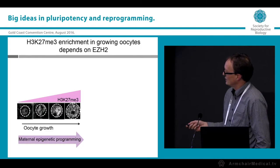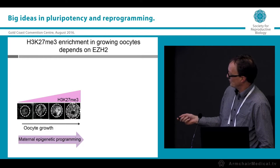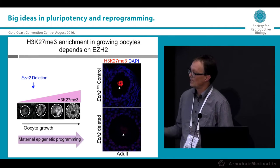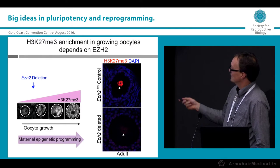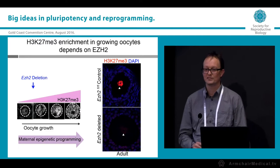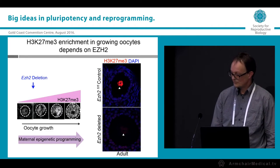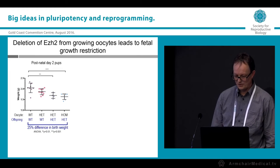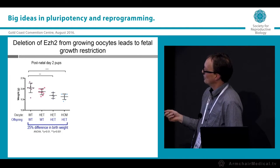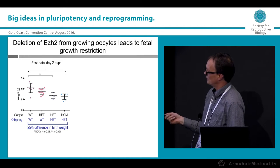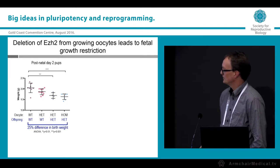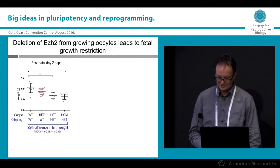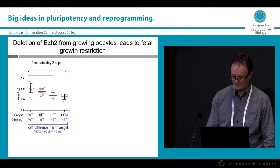H3K27 enrichment is depicted through oocyte growth, and when we delete EZH2 in the early growing oocyte we can almost completely block H3K27 enrichment. The offspring data so far shows that offspring from oocytes lacking or heterozygous for EZH2 are significantly different in birth weight — up to 25% lighter at the extremes — indicating a maternal effect in the oocyte.